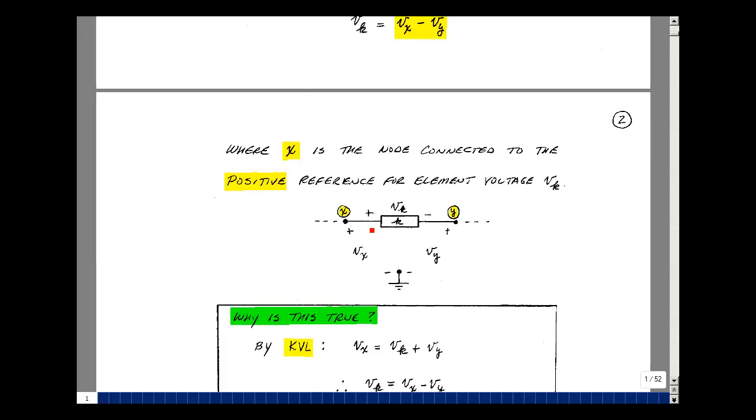So shown here, if I define V sub K from X to Y, the plus terminal is where I'm going to put V sub X to ground. And that implies that Y is from the minus terminal to ground. And what the property is saying is that V sub K is equal to V sub X minus V sub Y.